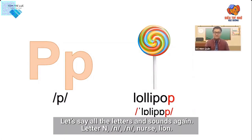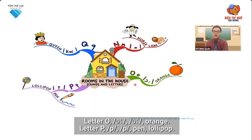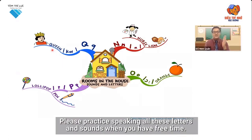Let's say all the letters and sounds again. Letter N — nuh — nurse — lion. Letter O — o — orange. Letter P — puh — pen — lollipop. Letter Q — quh — queen. Please practice speaking all these letters and sounds when you have free time.